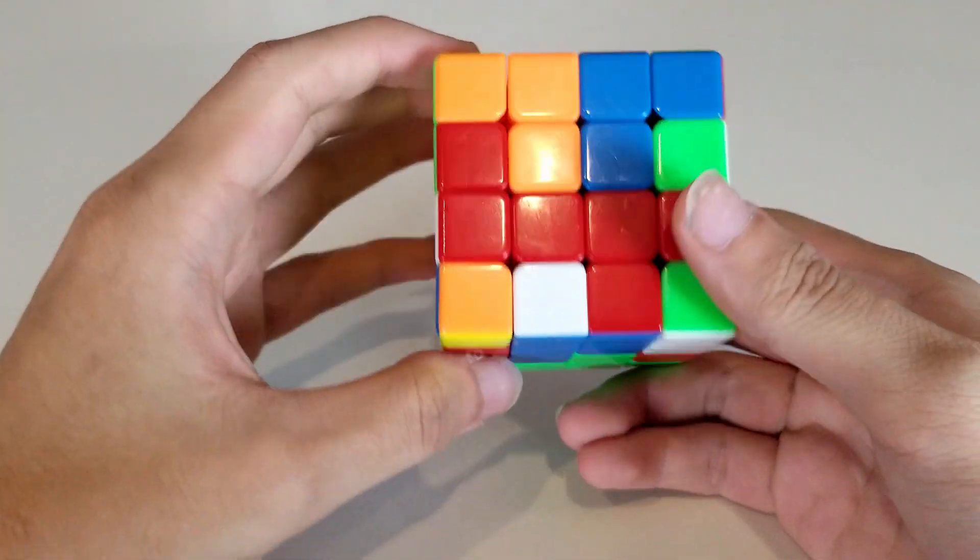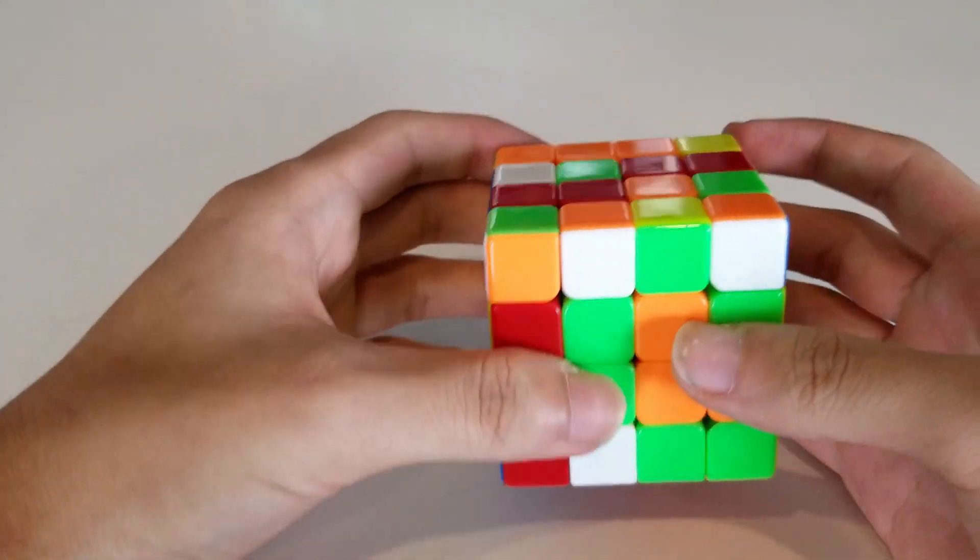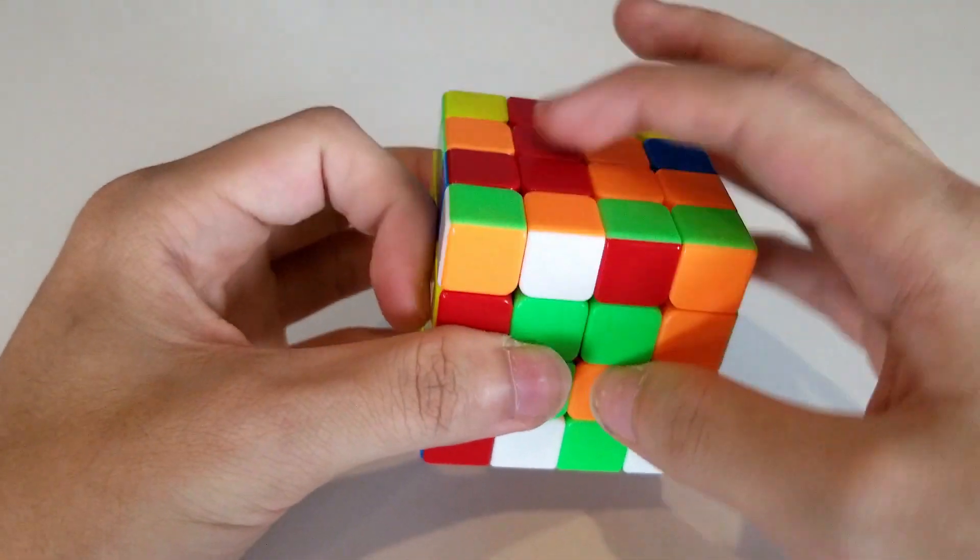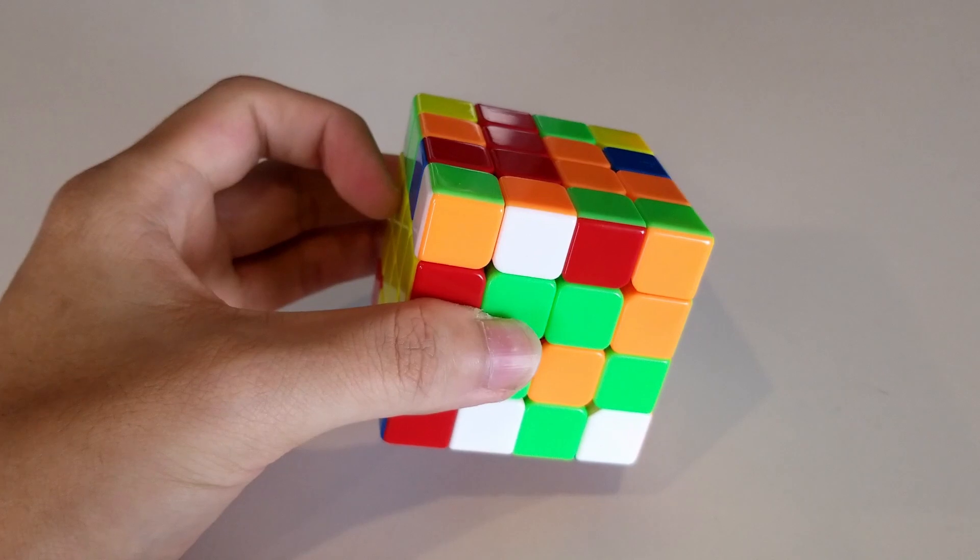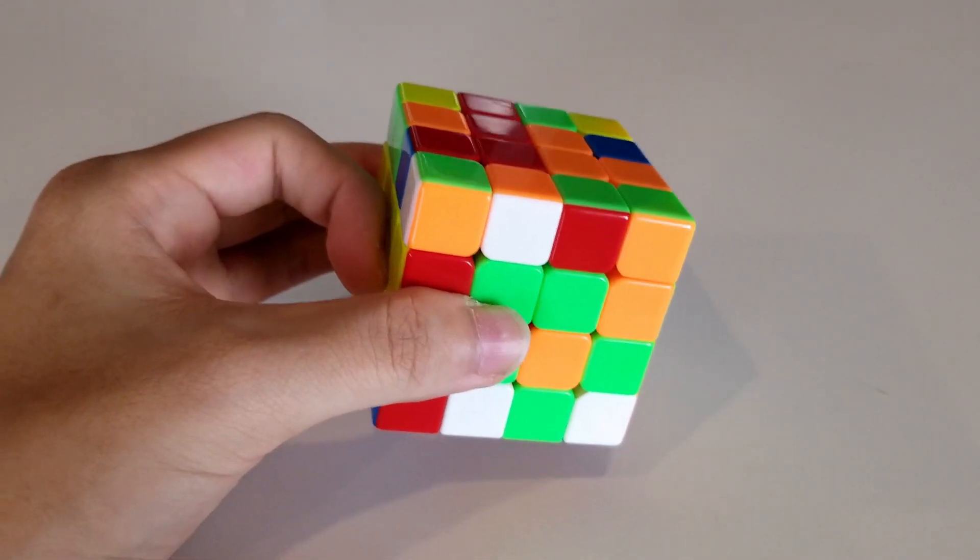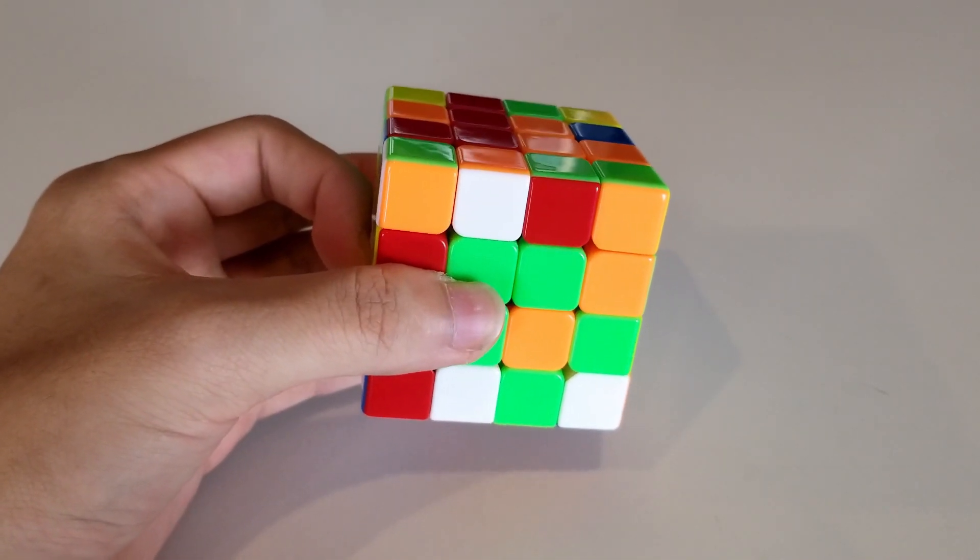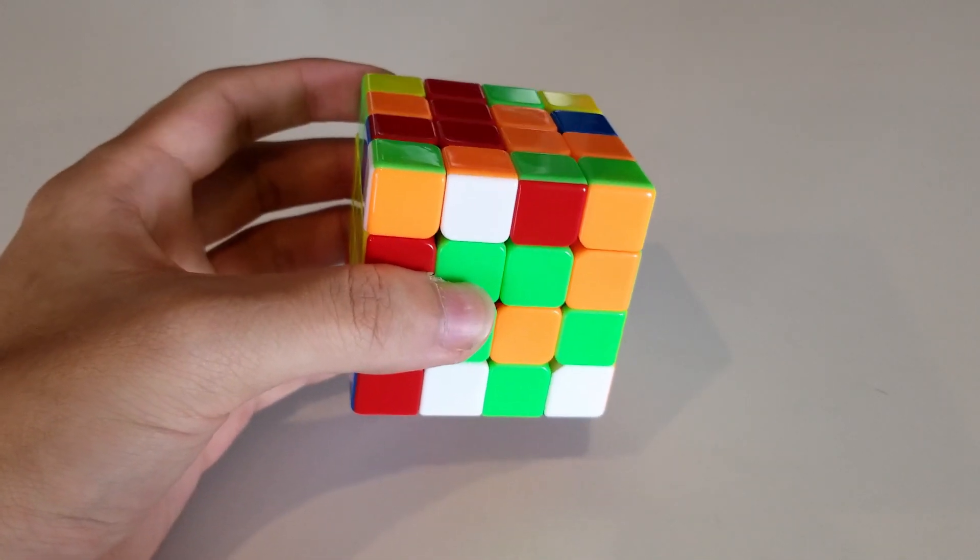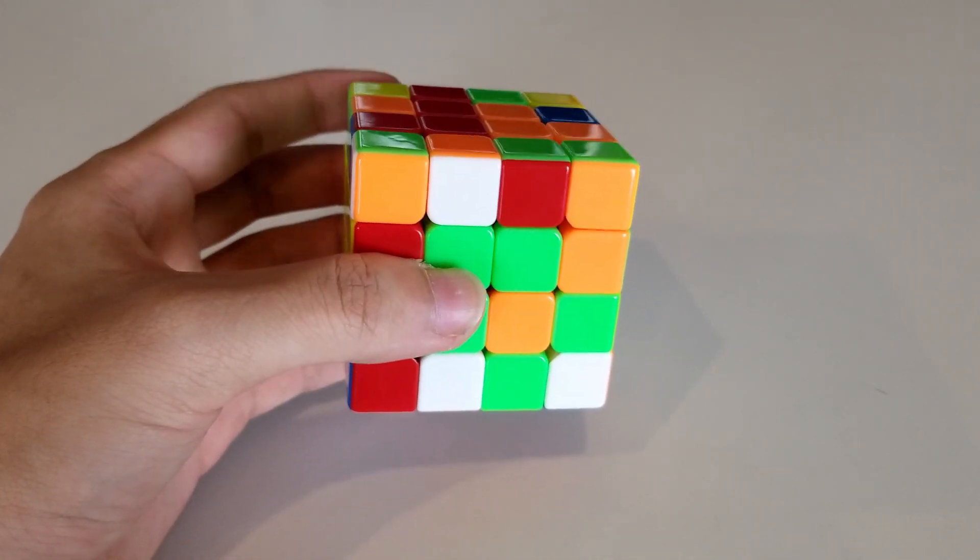Now we'll start with our last four centers. So it's odd right now, even, odd. And in most reduction-based methods, solving the third center is the point where the parity locks, so to speak, and it won't change until 3x3 stage.